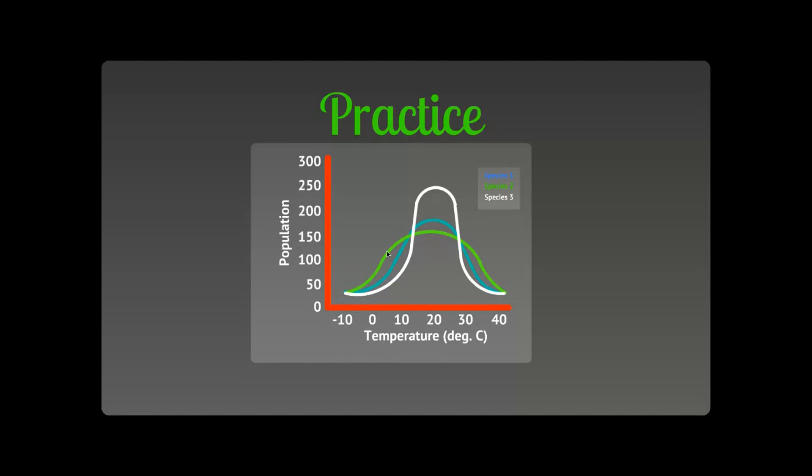So if you look at species two, it has this very wide curve. It can survive all the way from zero all the way up to almost 40 degrees. That's very wide tolerance - it can tolerate temperature very well.